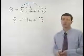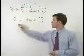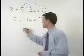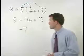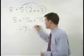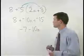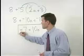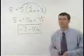Now just combine your like terms. 8 plus negative 15 is negative 7, and plus a negative 10a can be written minus 10a. So your answer is just negative 7 minus 10a.